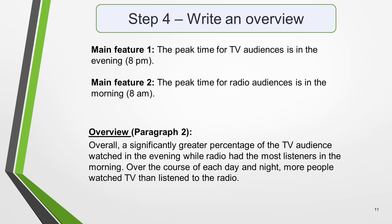In the second paragraph, you should report the main features you see in the graph, giving only general information — the detail comes later in the essay. You should also make any clear comparisons you spot. This is where we write about the general trends. Main feature one was: the peak time for TV audiences is in the evening at 8pm. Main feature two was: the peak time for radio audiences is in the morning at 8am. Now form these ideas into two or three sentences with a total of around 40 words, stating the information simply using synonyms where possible. No elaborate vocabulary or grammar structures are required — just the appropriate words and correct verb tenses.